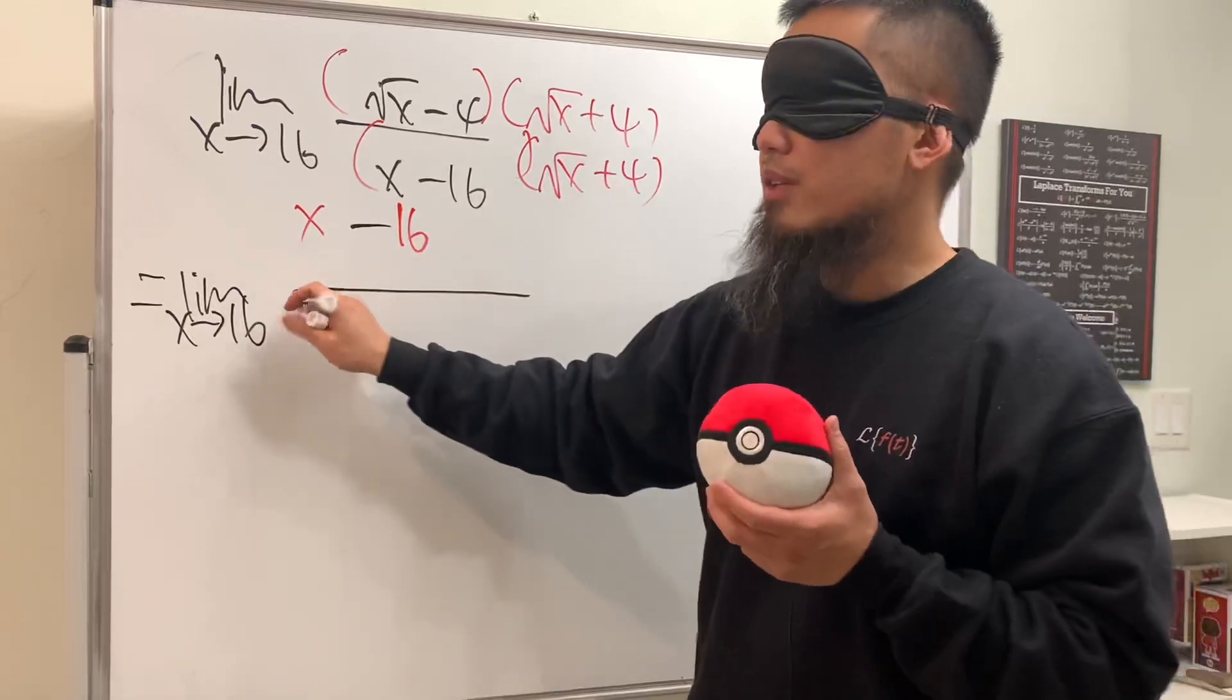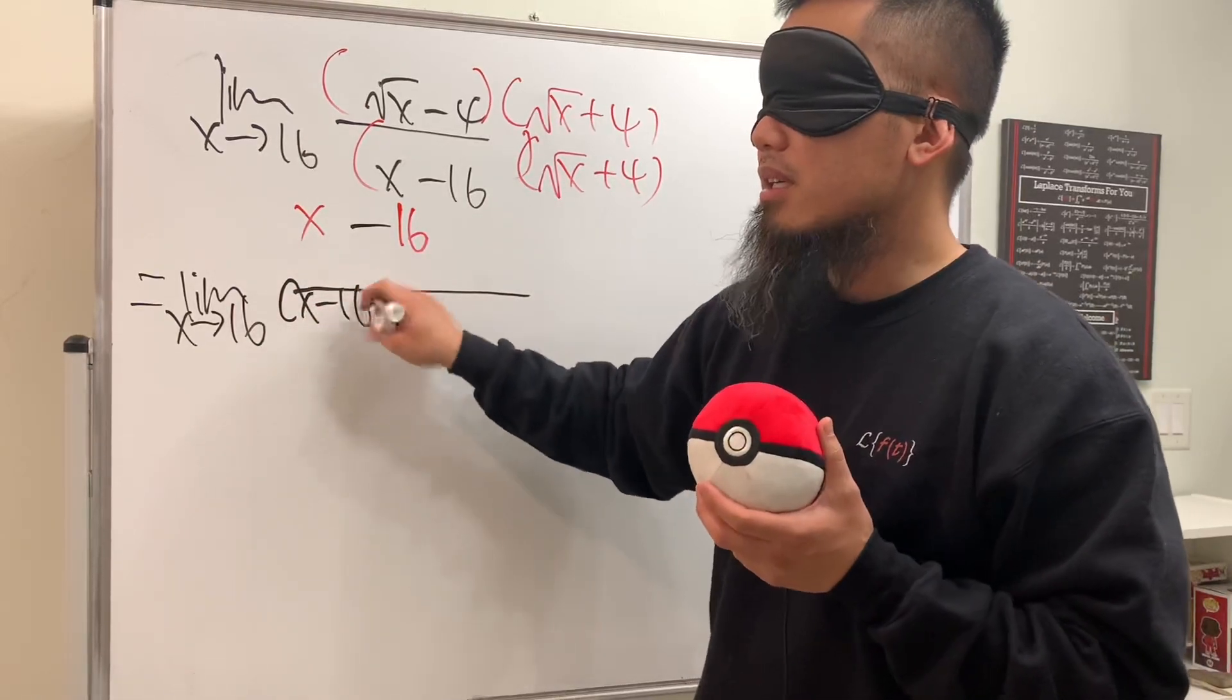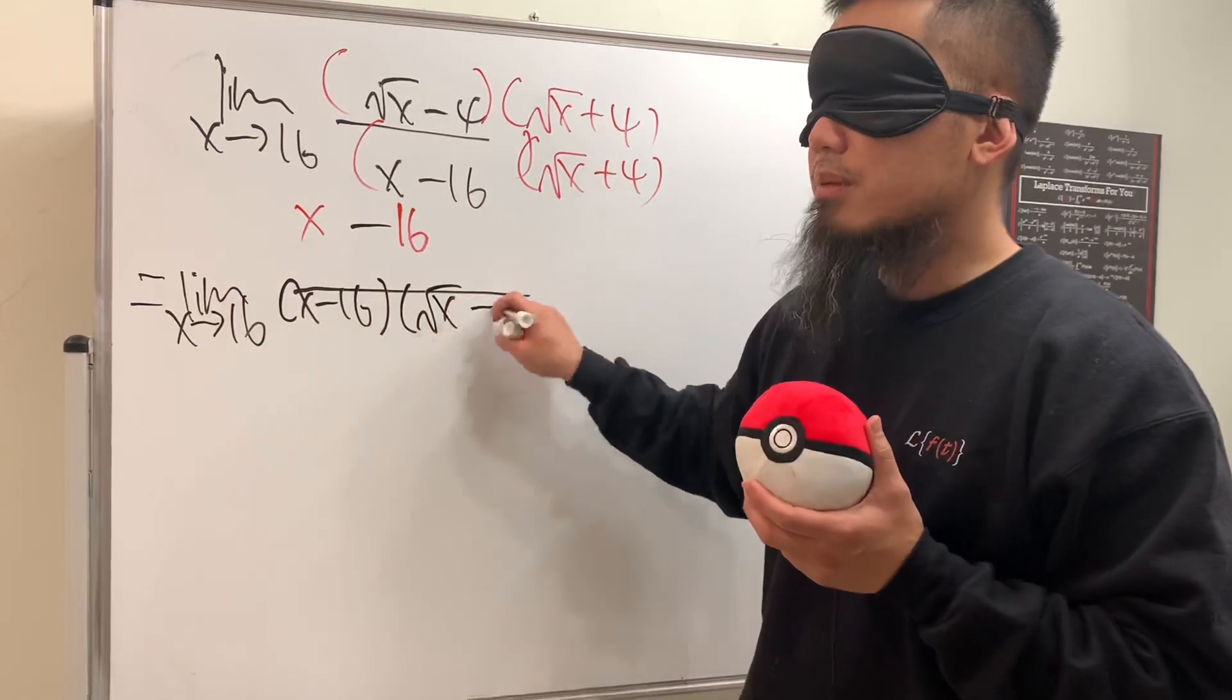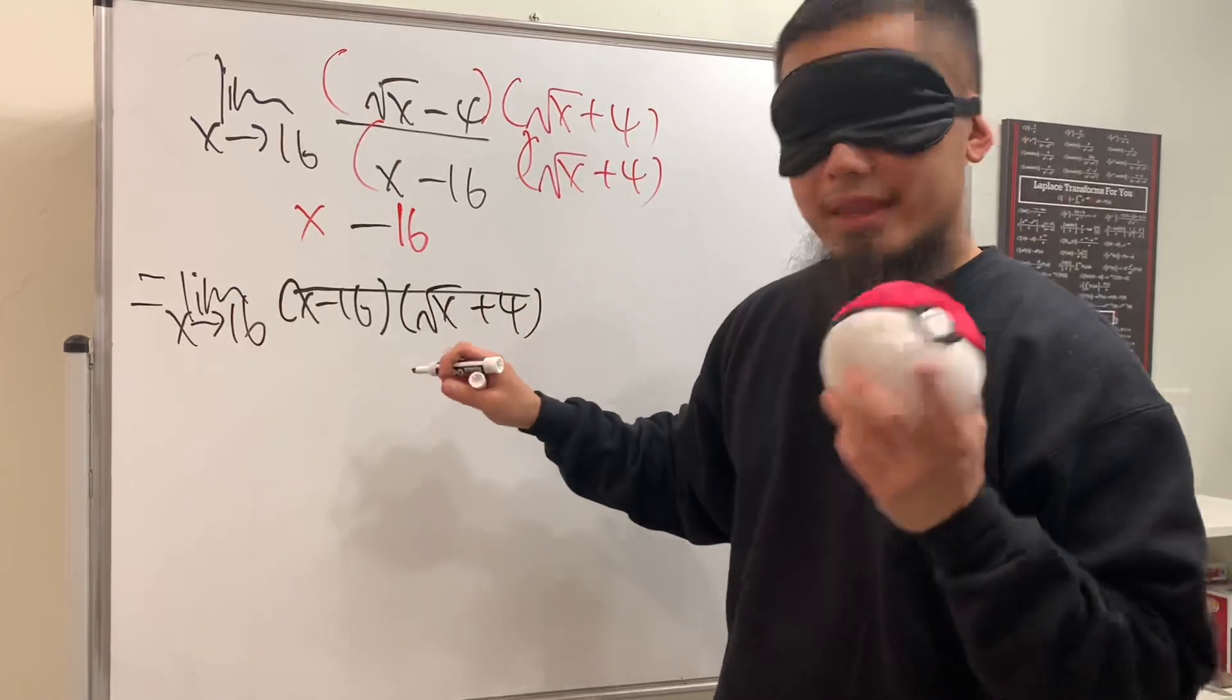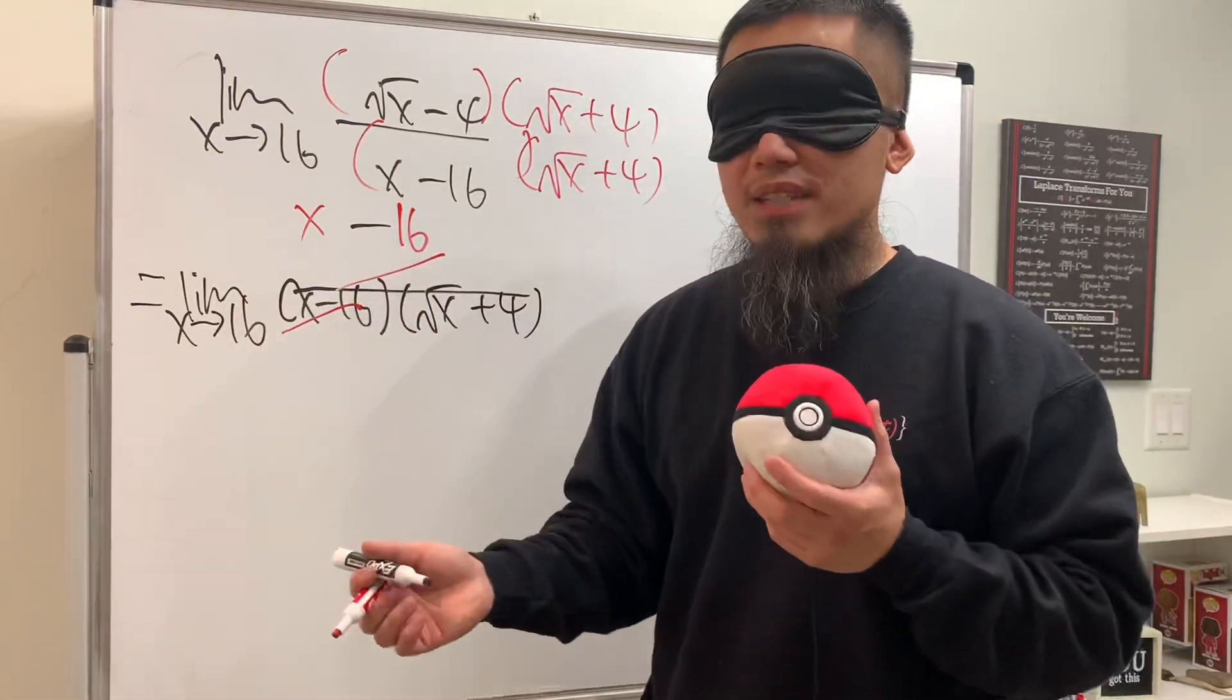On the bottom you just leave it, which is x minus 16 times square root of x plus 4. Now you see that this and that can solve very nicely.